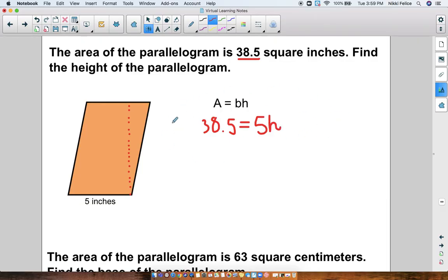Now, this one step equation. 38.5 equals 5h. How do we solve for h? We're going to use the inverse operation and we will divide. So you're going to do 38.5 divided by 5. And hopefully, you got the answer 7.7. So 7.7 inches is the height.